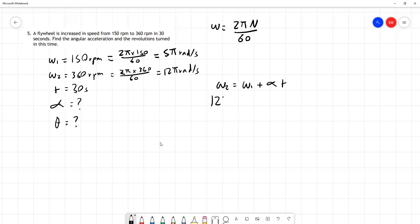We put in these values, keeping with pi: 12 pi is equal to 5 pi plus alpha times 30. A little bit of rearranging - if we subtract 5 pi from both sides we're left with 30 alpha is equal to 7 pi, and so alpha equals 7 pi over 30, which we put into our calculators gives us an answer of 0.733 radians per second squared.